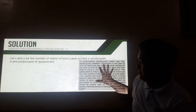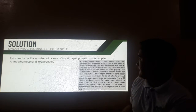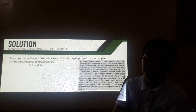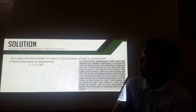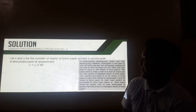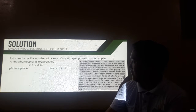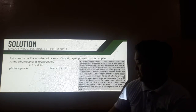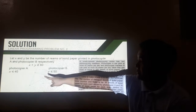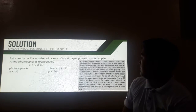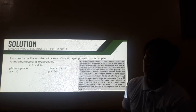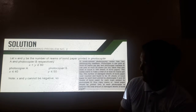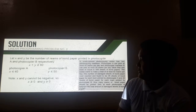According to this problem, the owner should produce at least 60 rims per day. So it will be given by this inequality: x plus y should be greater than or equal to 60. For photocopier A, it can only produce at most 40 rims per day, so x should be less than or equal to 40. For photocopier B, it can only produce at most 50 rims. Also, x and y cannot be negative, so x and y should each be greater than or equal to 0.